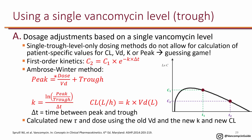Depending on the dose the patient received, use the volume of distribution from population kinetics along with the measured trough to estimate the peak. Based on this estimated peak, you can re-estimate K. Previously you used K from population kinetics; now you semi-individualize it because the trough is from the patient but the peak is still estimated. So overall, this K is not truly individualized.